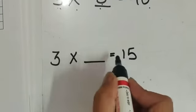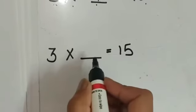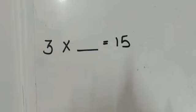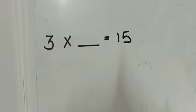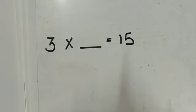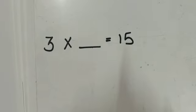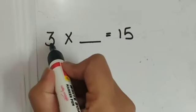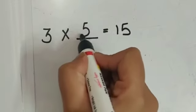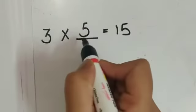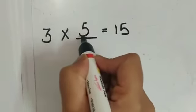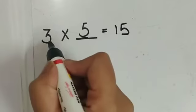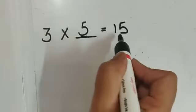So 3 into dash is equals to 15. What will come here? 3 1's are 3, 3 2's are 6, 3 3's are 9, 3 4's are 12, 3 5's are 15. So 3 into 5 is equals to 15. So 5 will complete this equation — 3 5's are 15.